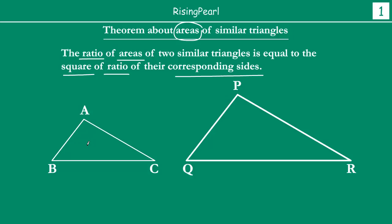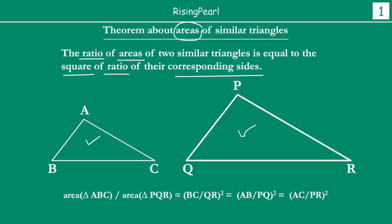That means, if we are given triangle ABC similar to triangle PQR, then the ratio of their areas — area ABC divided by area PQR — is equal to the square of the ratio of corresponding sides. Because these two triangles are similar, AB/PQ = AC/PR = BC/QR, and the ratio of areas equals BC/QR whole square, equals AB/PQ whole square, equals AC/PR whole square.